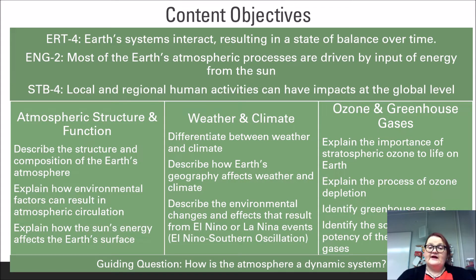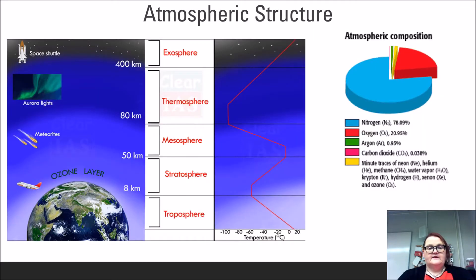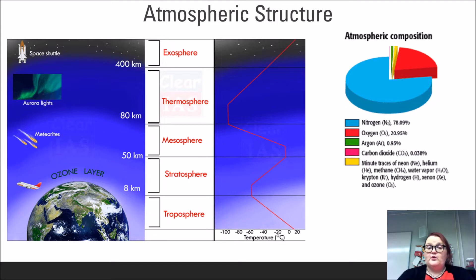This leads us to being able to answer our guiding question: How is the atmosphere a dynamic system? The atmosphere is a mixture of gases in a composition that is almost perfect for the support of life. The majority of the atmosphere, about 78 percent, is diatomic nitrogen or N2. Oxygen makes up 21 percent, and the remaining one percent is a combination of argon, carbon dioxide, and other trace gases like methane, water vapor, and ozone.